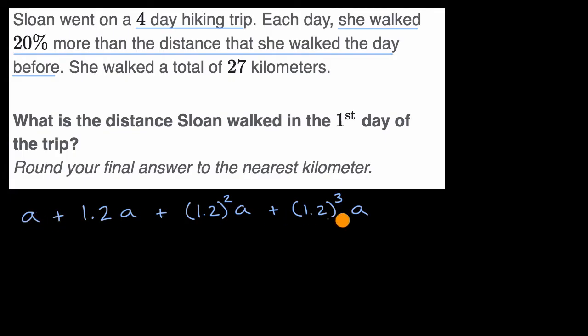So, this is an expression in A on how much she walked over the four days. And we know that she walked a total of 27 kilometers. So, this is going to be equal to 27 kilometers. Now, you could solve for A over here. You could factor out the A, and you could say,